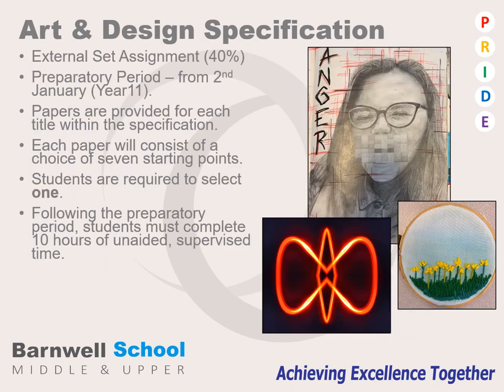The second part of the Art and Design specification is the external set assignment, worth 40% of your final grade. An exam paper will be given to the school in January of Year 11. Over a duration of time you will focus on a topic, an issue or a brief during a preparatory period, until you work in an unaided and supervised time of 10 hours. All work, including your portfolio and your external set assignment, is assessed by your teachers and marks are sent to the exam board by the end of May.